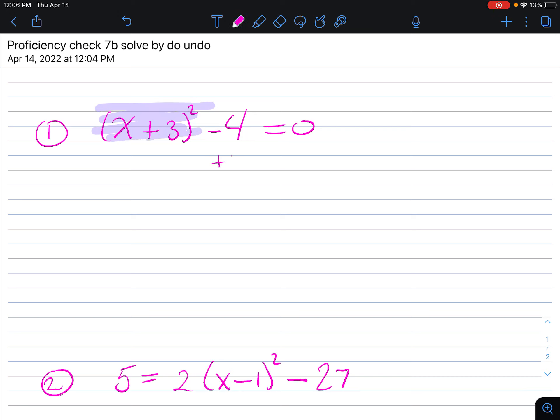So I'm going to add 4 to both sides. That's how I undo the subtraction. I have x plus 3 squared is equal to 4. Now to undo a square, we take the square root of both sides of the equation.